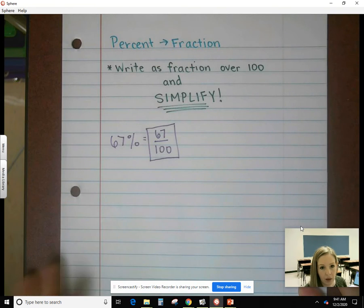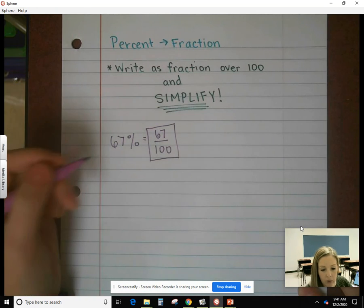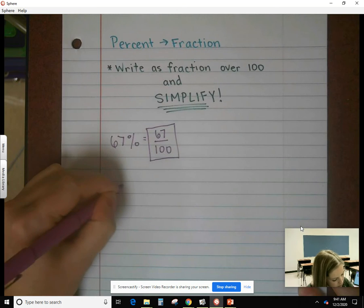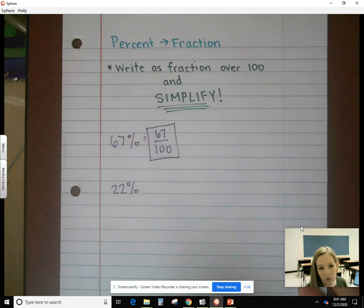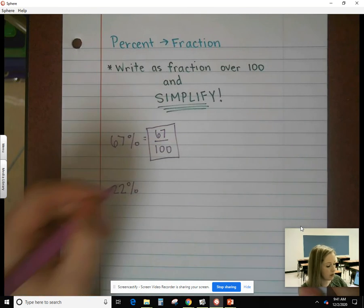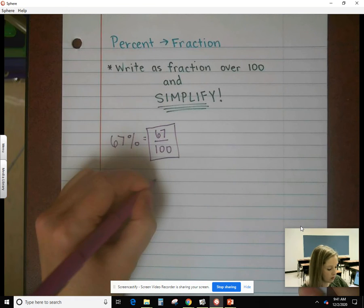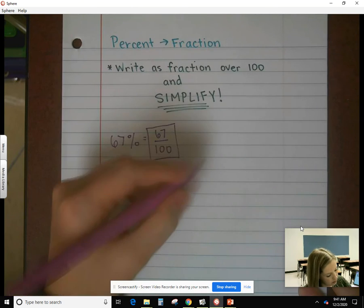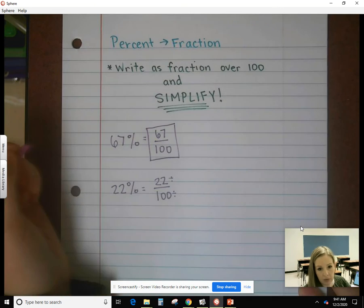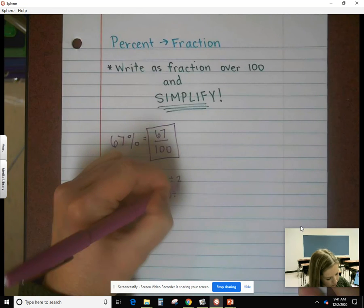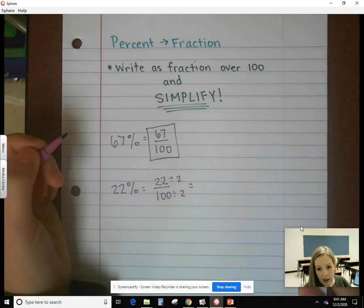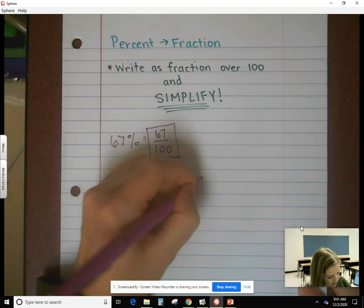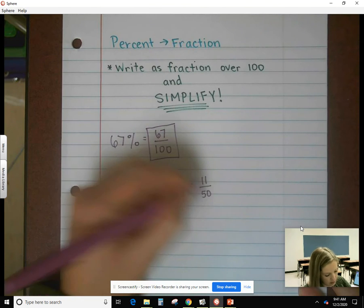Sometimes you'll get lucky like that. Another example would be 22%. This is more like what you're usually going to see. Again, percent means out of 100, so that's 22 out of 100. But we have to simplify. Both of those are even numbers, so we can divide them by 2. Half of 22 is 11, and half of 100 is 50.